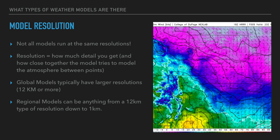Model resolution — not all models run at the same resolution. Resolution is how much detail you get, how tightly packed the model is simulating the atmosphere. We talk about it in kilometers. Global models have larger resolutions, like 12 kilometers or more — meaning it's simulating the atmosphere in 12-kilometer pockets. You're not getting storm-scale calculations at 12 kilometers; you're getting more broad scale. When models are popping out storms, it's not individual storms — it's more like 'there's going to be precipitation in this area.'